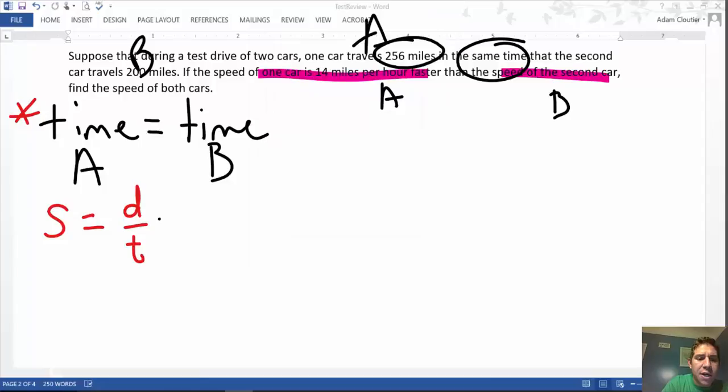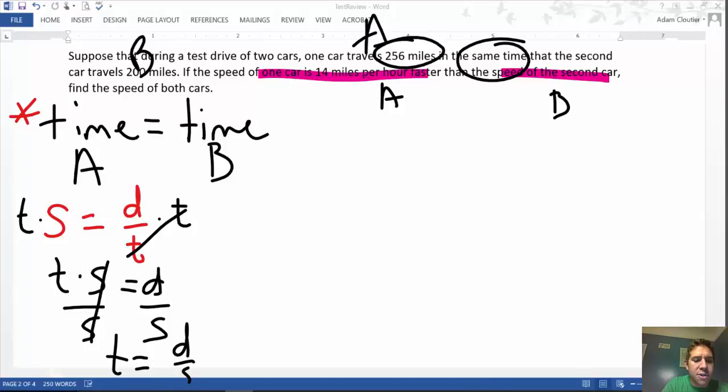Multiply both sides by time. Cancel the times on the right-hand side. And then clean it up a little bit to say distance equals time times speed. Get time by itself. Divide both sides by speed. And time equals distance over speed.